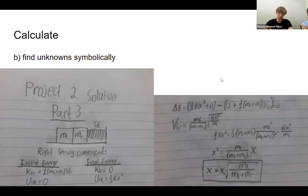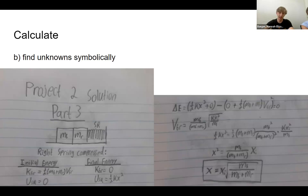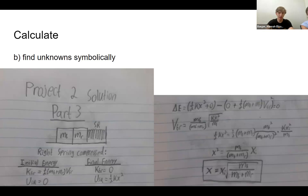Finally, part three is also an energy analysis. The initial energy is the kinetic energy of the combined blue and red block, represented as one-half mv squared, and the potential energy of the right spring is zero. The final energy is when the blocks stop moving, so kinetic energy is zero and all energy is in the spring's potential energy, one-half kx squared. Using conservation of energy, we solve that the distance the right spring is compressed equals the initial compression xi times the square root of the mass of the blue block over the mass of the blue plus red block.